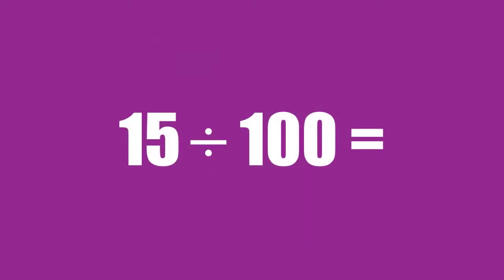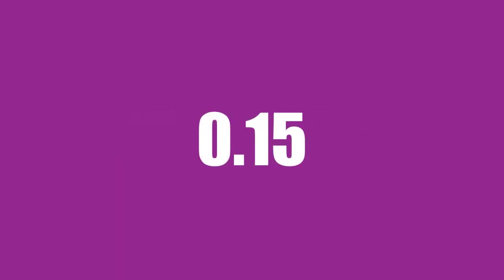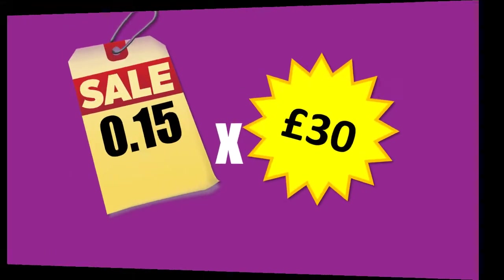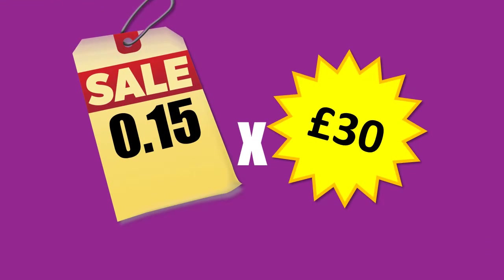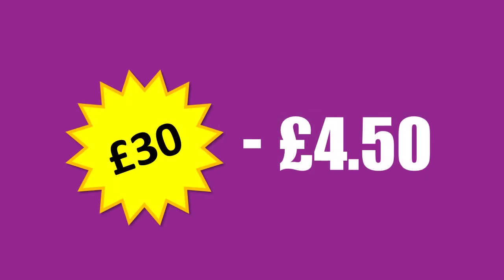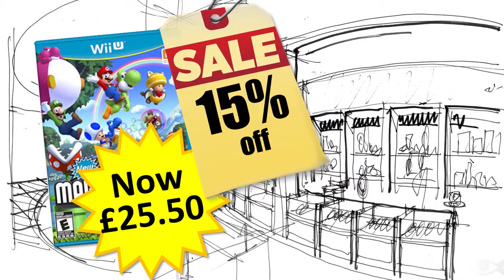If you are ever unsure of how to turn a percentage into a decimal, you can also divide it by a hundred to get your answer. If you multiply 0.15 by thirty pounds, then you will get your saving: four pounds fifty. Thirty pounds take away four pounds fifty is twenty-five pounds fifty — so that's how much you'll have to pay with fifteen percent off.